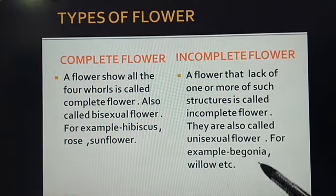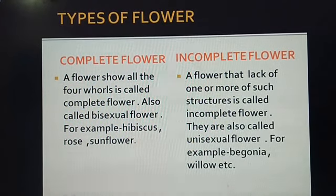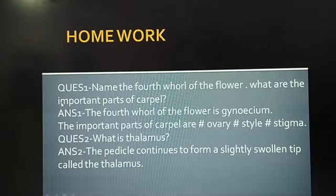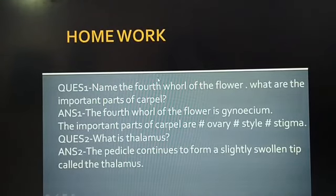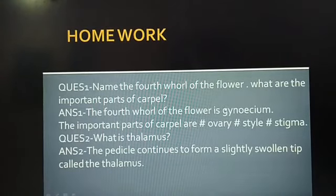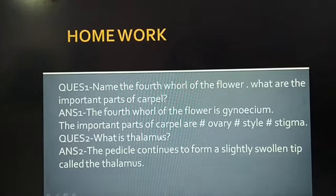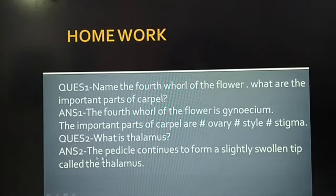Now students, I will stop the topic here and give you some questions to do in your copy. Question number one: Name the fourth whorl of the flower and what are the important parts of a carpel? Answer: The fourth whorl of the flower is gynoecium. The important parts of carpel are ovary, style and stigma. Question number two: What is thalamus? Answer: The pedicel continues to form a slightly swollen tip called the thalamus.